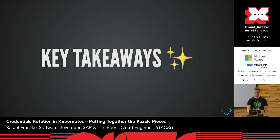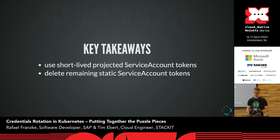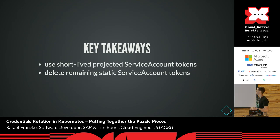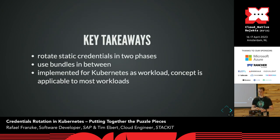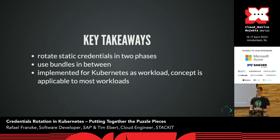What are the key takeaways of our talk today? First, we should use short-lived credentials wherever possible because they are rotated for us — we don't have to take care of it. If there are any static service account tokens remaining in older clusters, we should delete or at least invalidate them to minimize security risk. If we can't use short-lived credentials, we can rotate static credentials in two phases, using the bundles approach in between to make it disruption-free. We implemented this for Kubernetes as a workload in project Gardener, but the concept is applicable to most other workloads.